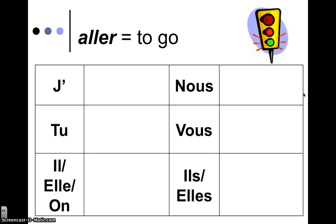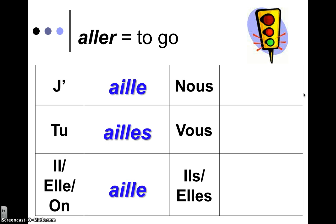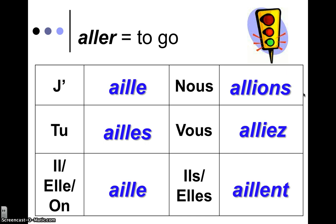And we'll continue with 'aller,' which gets exciting: 'j'aille, tu ailles, il aille, nous allions, vous alliez, ils aillent.' So you see you've got the -e, -es, -e still, and the -ions, -iez, -ent. But notice here we're going 'aill-' in the stem and this is 'all-.' So be careful.